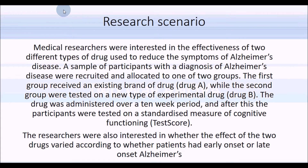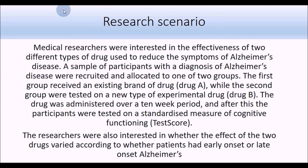We'll start off with a research scenario. This data was based on similar data that we used when we did a clustered bar chart many weeks ago. I've simplified the data set slightly, so we're just dealing with two conditions per independent variable. Medical researchers were interested in the effectiveness of two different types of drug to reduce symptoms of Alzheimer's. They recruited patients with Alzheimer's and allocated them to one of two groups. The first group received an existing drug - drug A - and the second group tested a new experimental drug. After a 10-week period, participants were tested on a standardized measure of cognitive functioning, which we'll call test score.